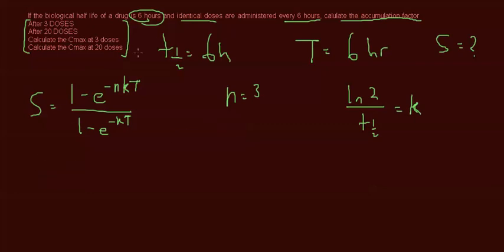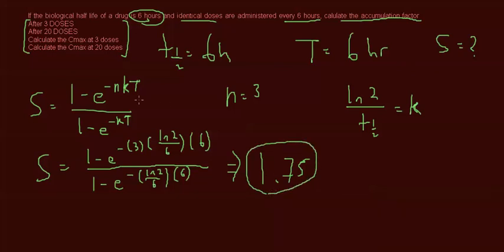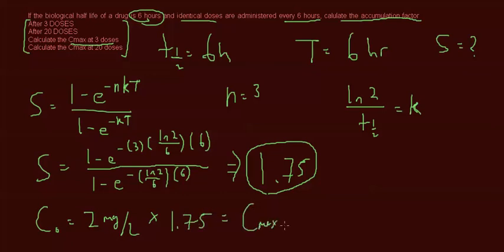Working it out, S at three doses comes out to approximately 1.75. So if we want C max at three doses, and let's say C0 is 2 mg/L, then C max at dose three = C max 1 * S_3 = 2 * 1.75 = 3.5 mg/L. That's the accumulation factor applied to get C max at a specific dose.